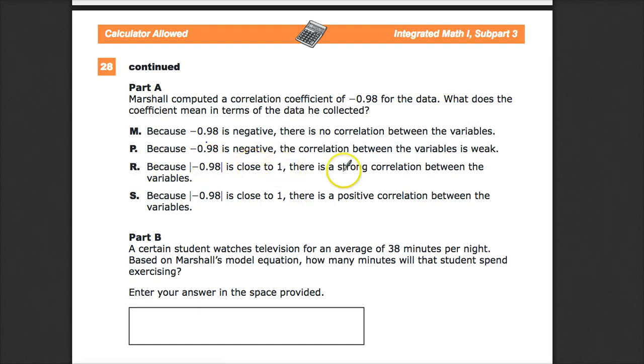Because it's negative, the correlation between the variables is weak. That's not true at all. Negative versus positive doesn't have anything to do with how strong or weak the connection is. It's negative because as one increases, the other decreases. The correlation coefficient is 0.98, that's 98%, that's really strong correlation. Because the absolute value is close to 1, there's a strong correlation between the variables. That's pretty good. It's negative, so as one goes up, the other goes down. And because it's close to 1, there's a positive correlation. No, the absolute value gives us an analysis of strong versus weak. The answer is R.